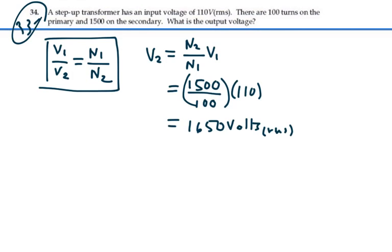If we deal with maximum voltages, then we'll end up with maximum voltages. If we deal with RMS voltages, then we'll have RMS voltages. 1,650 volts RMS.